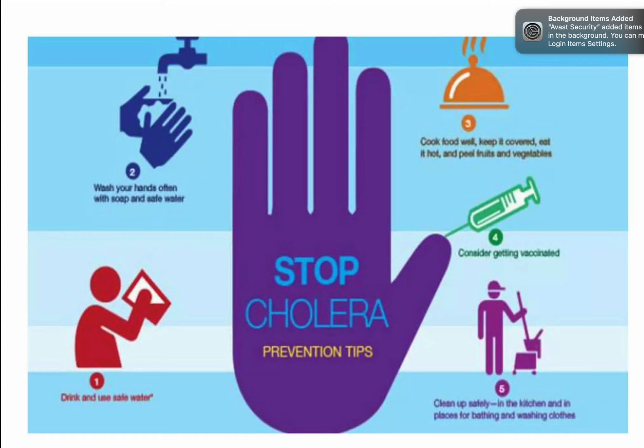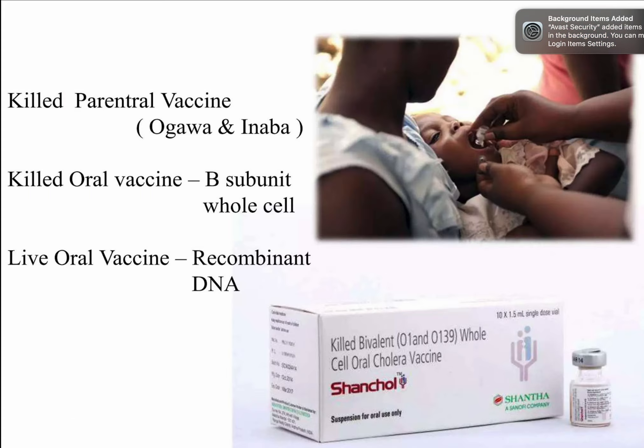Other species in the Vibrio genus include Vibrio parahemolyticus and Vibrio vulnificus, which are halophilic and found in marine food. These Vibrios require NaCl for growth. The Kanagawa phenomenon is associated with the hemolytic activity of some Vibrios, particularly V. parahemolyticus. Related genera such as Aeromonas and Plesiomonas are also gram-negative, motile, oxidase-positive organisms, with species like Aeromonas hydrophila and Plesiomonas shigelloides.